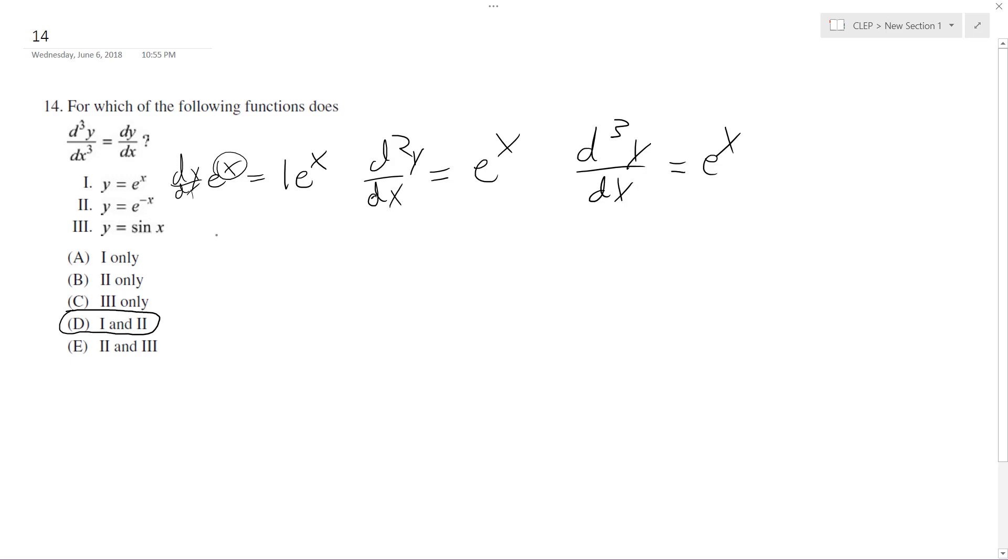So what about the second one? dy dx - we pull down negative x, but the derivative of negative x is negative 1, so we get negative e to the negative x. The second derivative - negative times negative gives us positive e to the negative x. And the third derivative d cubed y dx equals negative e to the negative x. So you can see that they're both equal.